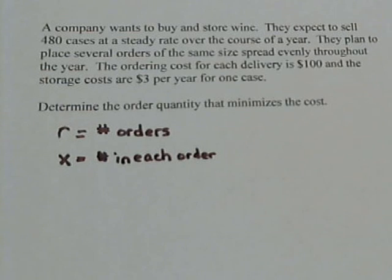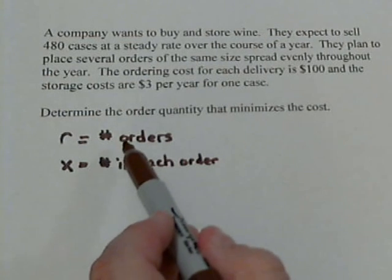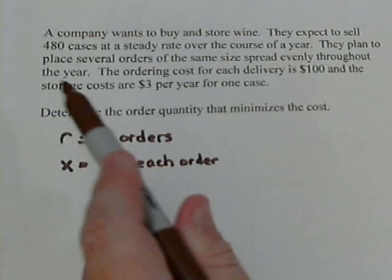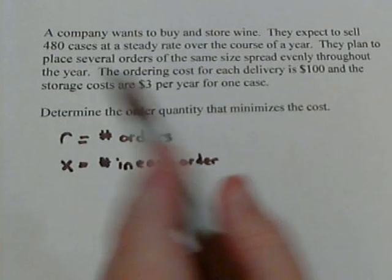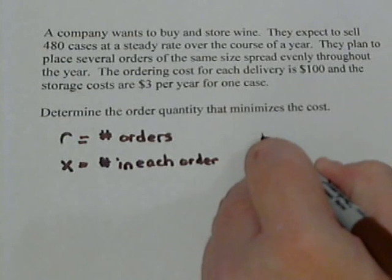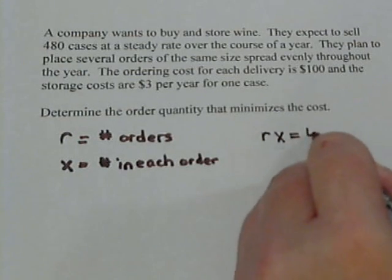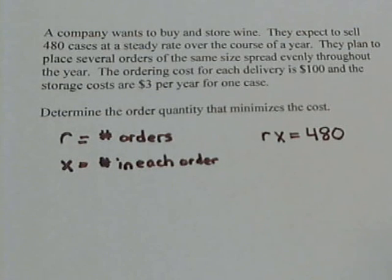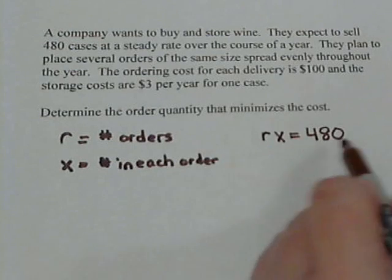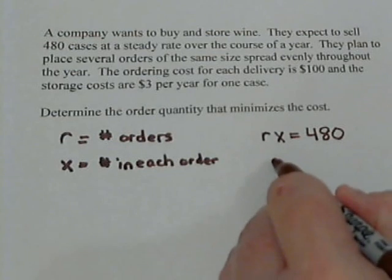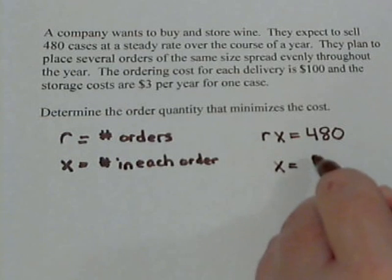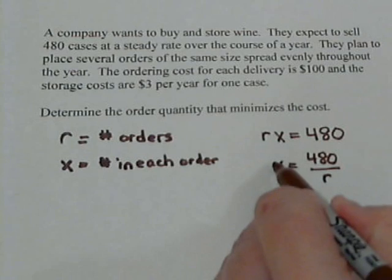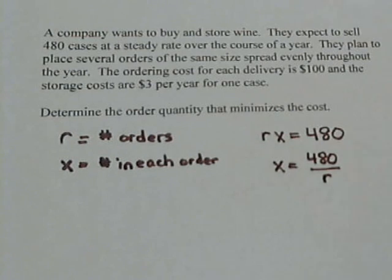What's our first formula? Well, we know that if we take however many orders they have, multiplied by the number of cases in an order, that's got to multiply out to be our 480. So one of our formulas is going to be R times X, that has to be 480. And we're going to, let's rearrange this. Let's divide both sides by R. So we'll have X equals 480 divided by R. And this will come in handy later when we need to do a substitution.